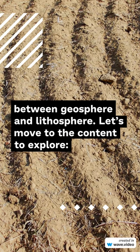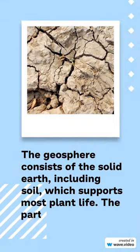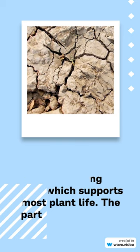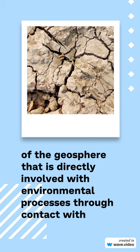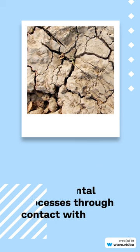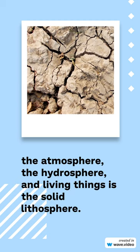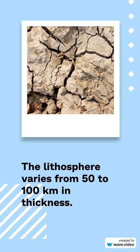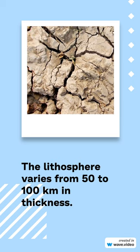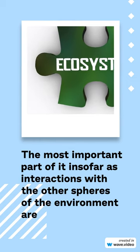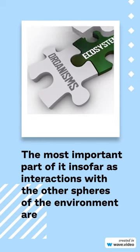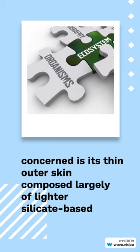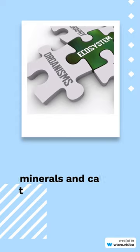Let's explore the geosphere. The geosphere is the solid part of the Earth. It extends to a depth of more than 300 kilometers of thickness. The most important part of it, as far as interactions with the other spheres of the environment are concerned, is its thin outer skin composed largely of lighter silicon-based minerals, called the crust.